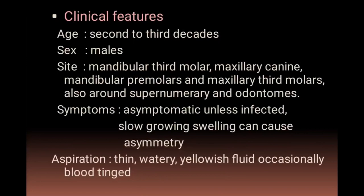Clinical features: dentigerous cyst is commonly seen in the second to third decades and in males. Common sites include the mandibular third molar and maxillary canine areas, as well as mandibular premolar and maxillary third molars. It can also be found associated with supernumerary teeth and odontomas. It is mostly asymptomatic unless secondarily infected, presenting as a slow-growing swelling that can cause asymmetry. Aspiration yields thin, watery, yellowish fluid with occasional blood.